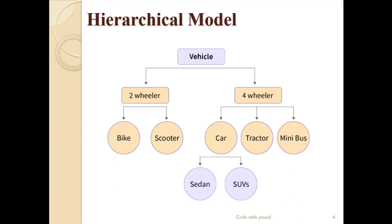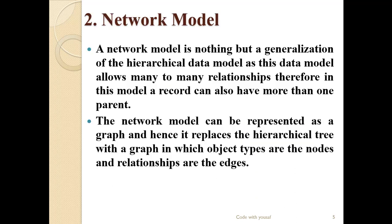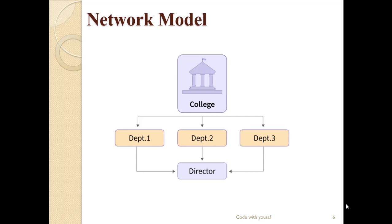The second one is the network model. The network model is the generalized form of the hierarchical model. This data model allows us to make many-to-many relationships. The network model is represented as a graph, with nodes and edges representing the relationships. For example, in a college, departments connect to a director through nodes and edges, forming a network.